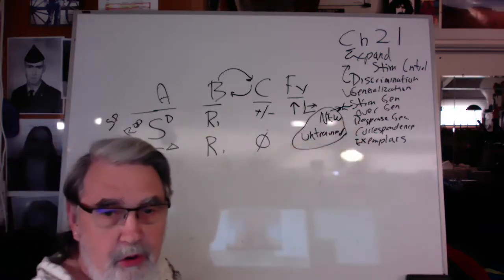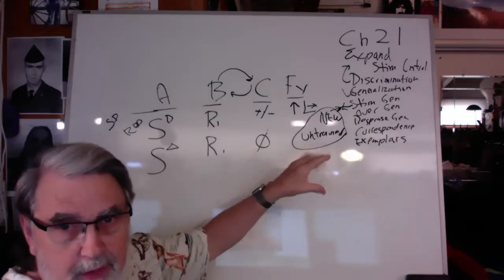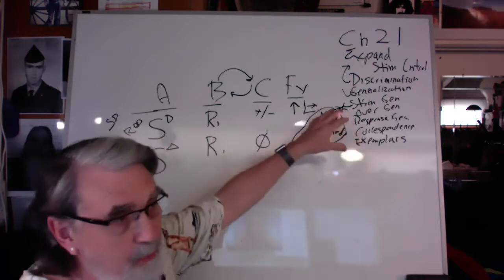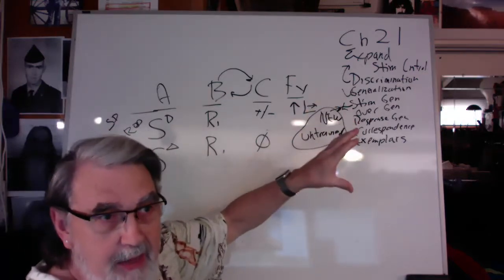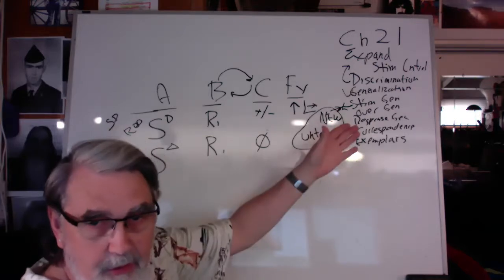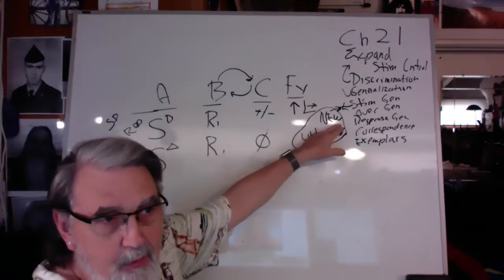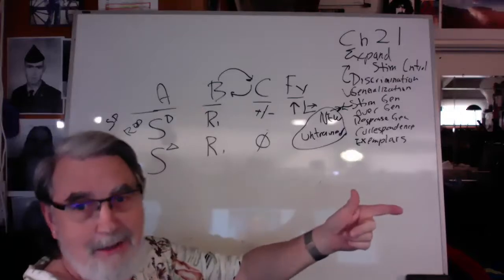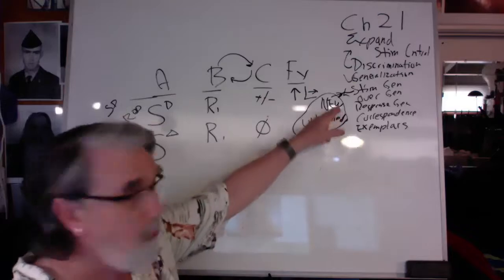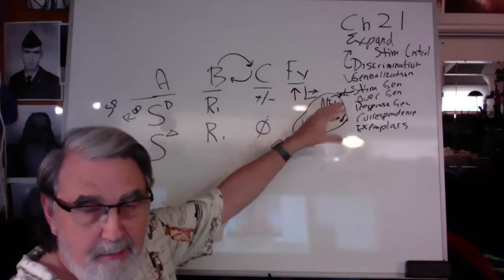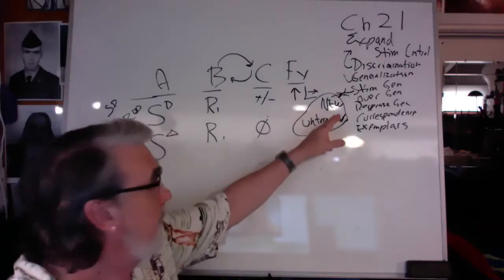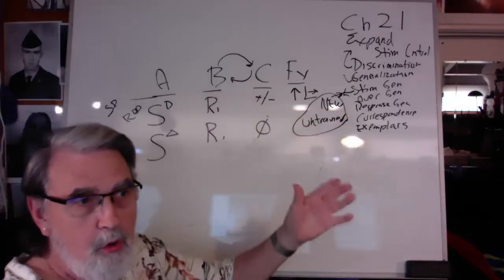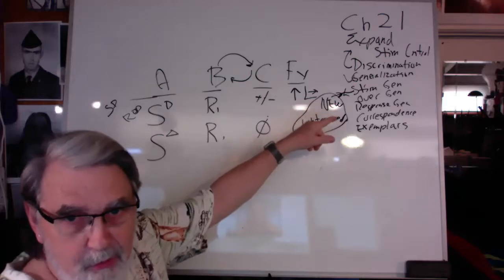Sometimes we get overgeneralization — responding to a stimulus class and overgeneralizing what that is. An example: a baby learning to say 'daddy' discriminates dad from mom. But if they see a neighbor at the store and that man has a beard like dad, the child might overgeneralize and call him daddy based on the property of the beard. They're not discriminating between daddy and a man who looks like daddy. That means we have to go back and do some tighter discrimination between 'this one's daddy' and 'that one's not.'